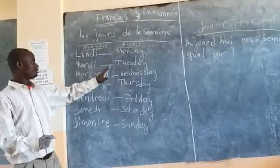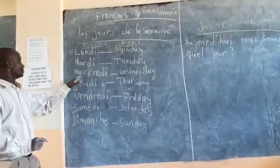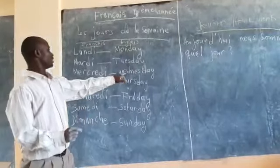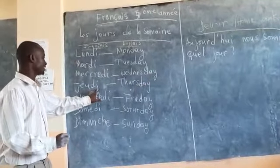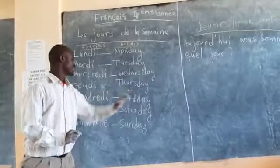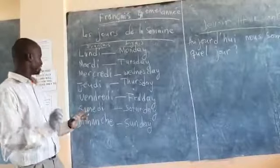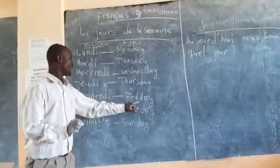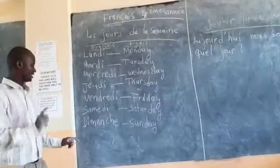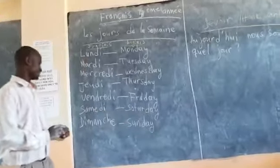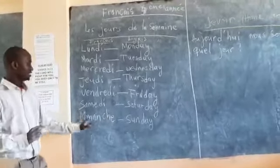Mercredi, on va dire Wednesday. Jeudi, à l'anglais on va dire Thursday. Vendredi, qu'est-ce qu'on va dire? On va dire Friday. Samedi, on dira Saturday. Dimanche, on va dire Sunday.